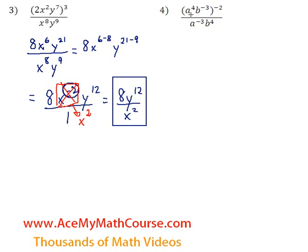So a to the power of 4 to the power of negative 2 will be just a to the power of negative 8, since 4 times negative 2 is negative 8. b to the power of negative 3 to the power of negative 2 will be b to the power of positive 6, since negative 3 times negative 2 is 6. All over a to the power of negative 3 and b to the power of 4.